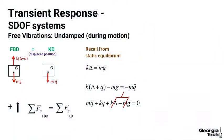We can cancel out k delta minus mg because, once again, throughout motion that static spring force k delta is always going to balance the weight. So those terms go away, and we're just measuring the motion from that static equilibrium position. The differential equation becomes m q double-dot plus k q equals zero.